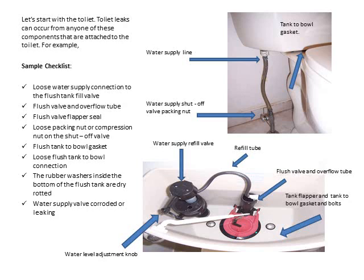Let's start with the toilet. Toilet leaks can occur from any one of these components attached to the toilet. For example: a loose water supply connection to the flush tank fill valve, flush valve and overflow tube, flush valve flapper seal, loose packing nut or compression nut on the shut-off valve, flush tank to bowl gaskets, loose flush tank to bowl connections, dry-rotted washers, and a corroded or leaking water supply valve.